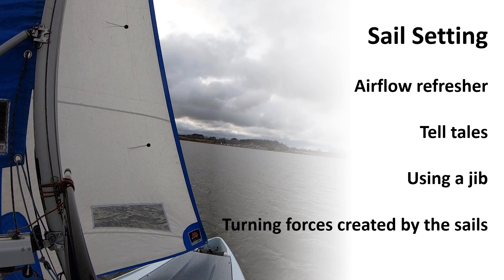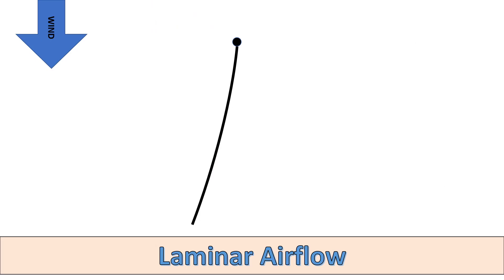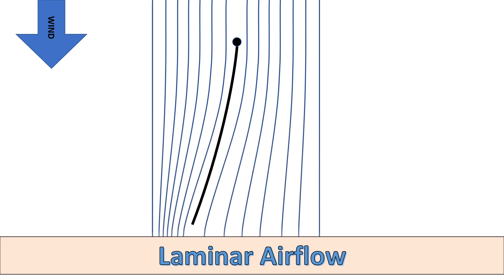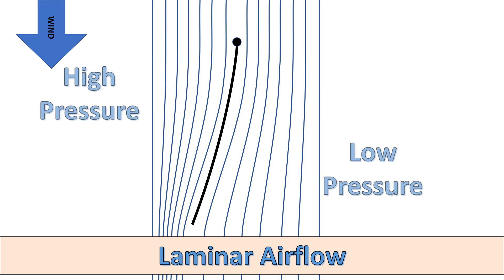A quick recap on airflows then. A laminar airflow is what we're aiming for most of the time. This happens when we use the sail to deflect or bend the wind, creating a pressure difference and therefore a driving force. Think of it working like a wing, only the physics is a bit different because a wing is much more three-dimensional.